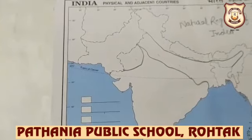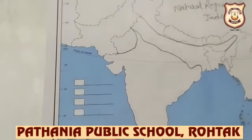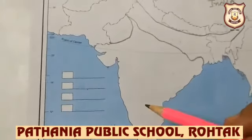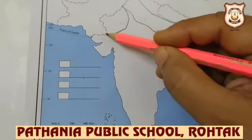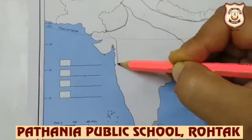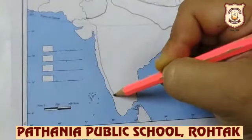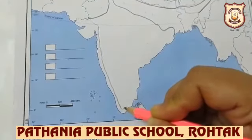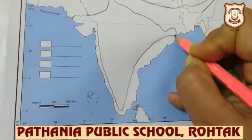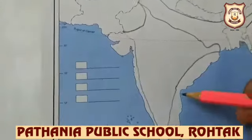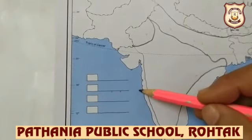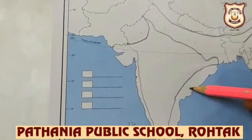Before that, we'll discuss the coastal plains. India is bordered by the Arabian Sea on this side, the Bay of Bengal here, and the Indian Ocean at the bottom — giving us two coastlines. The western coastal plains are narrower. The eastern coastal plains are wider than the western coastal plains.